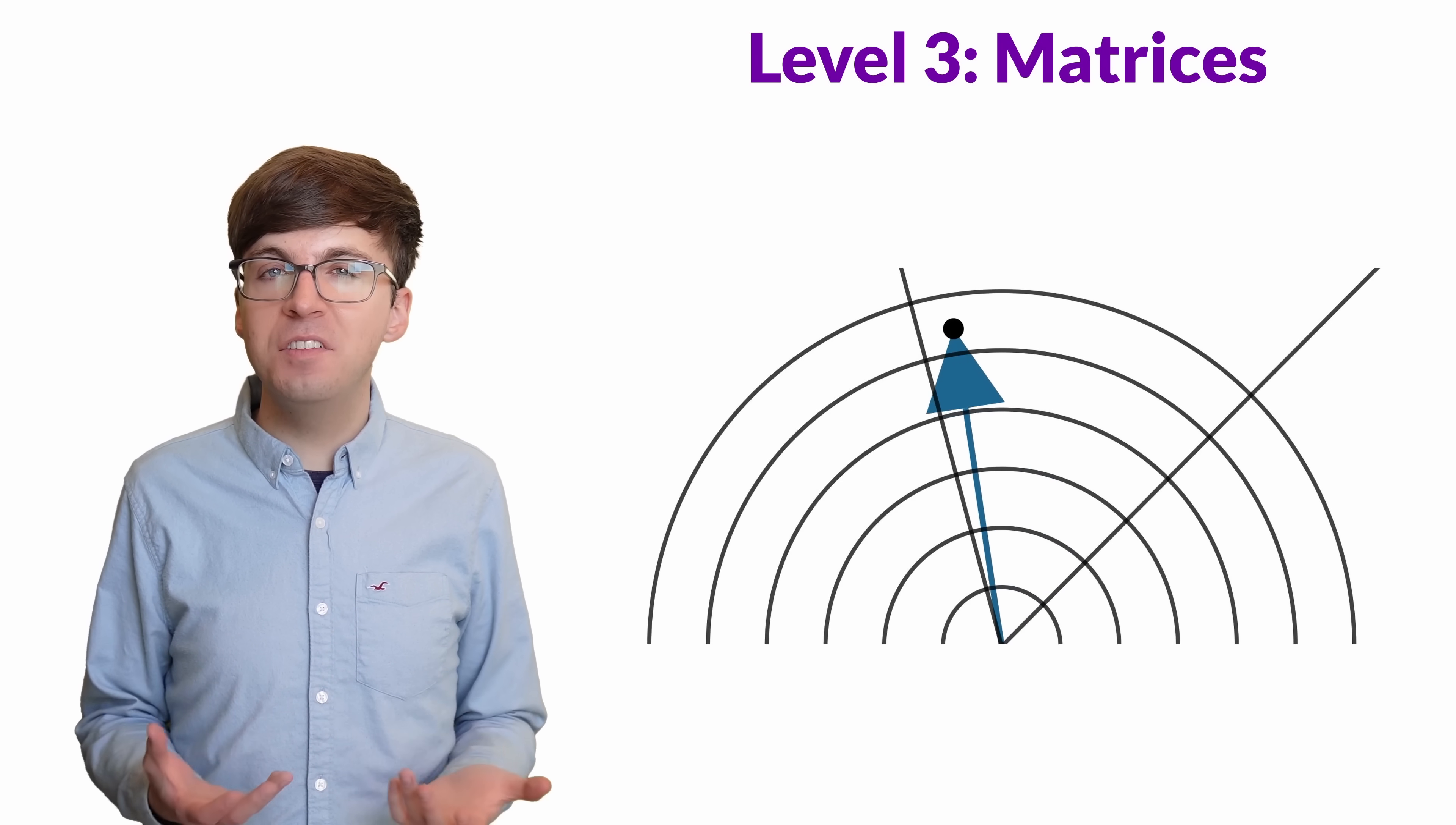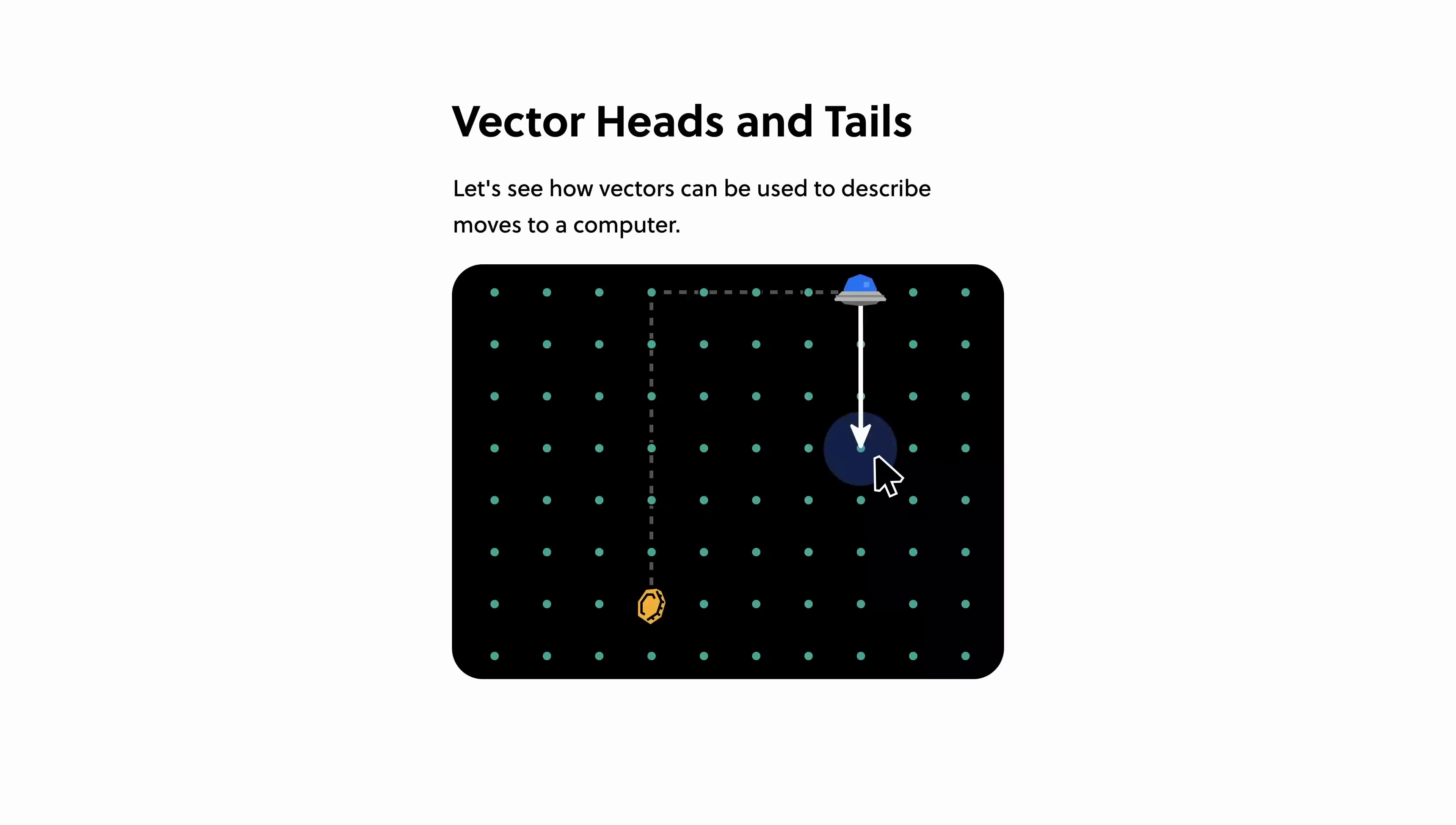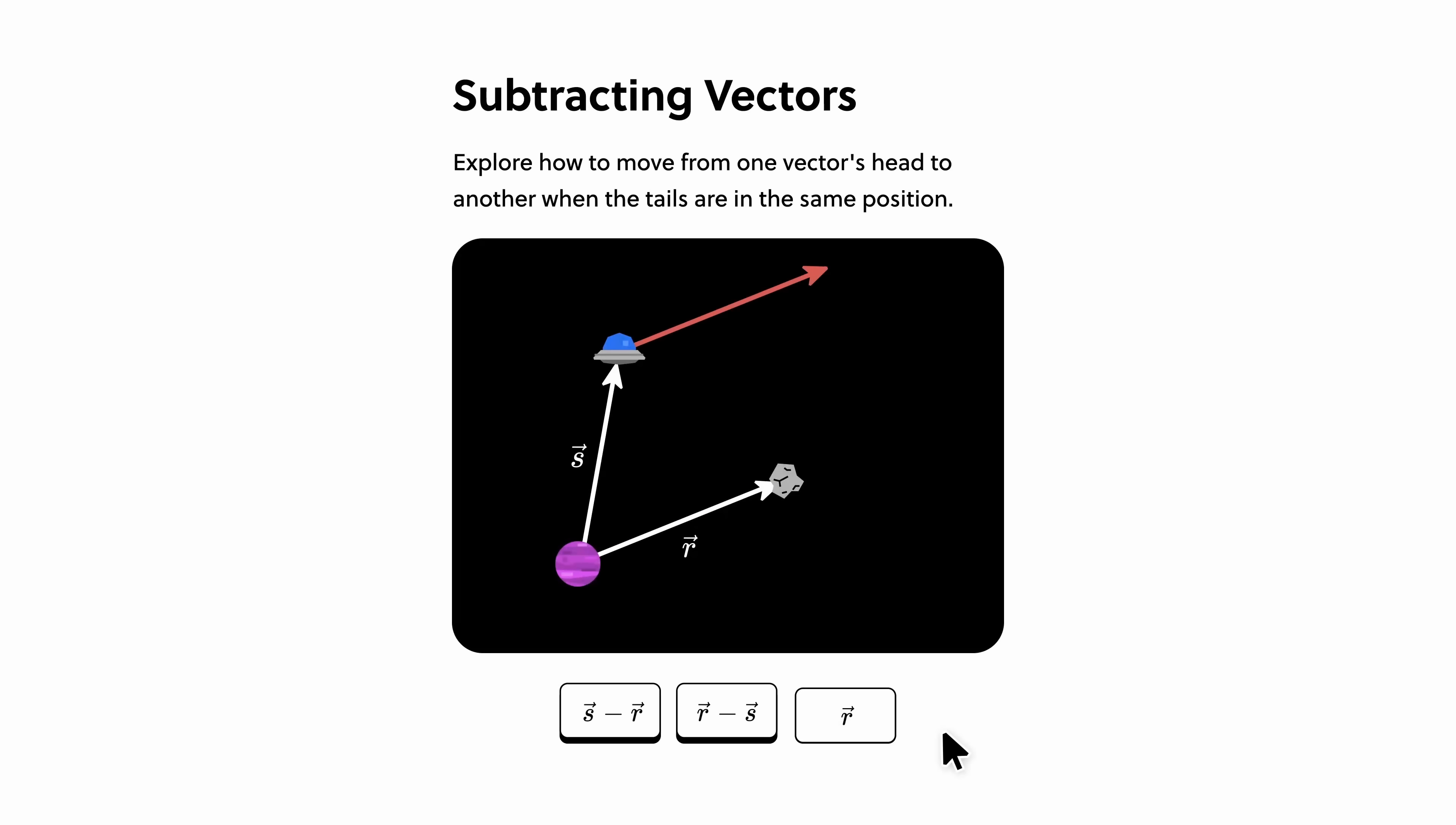We've seen how nice complex numbers are if we look at them the right way, using matrices or their polar form. A free and easy way to dive deeper into these topics is with Brilliant, the sponsor of this video. With Brilliant, you learn by doing, exploring thousands of interactive lessons in math, programming, data analysis, and AI. Lessons on Brilliant are filled with fun and engaging problems that you can solve in a few spare minutes each day. For example, instead of just reading the definition of the mean squared error, you create your own fit line and see the mean squared error change based on your choices. With Brilliant, you build your critical thinking skills through problem solving, not memorizing.